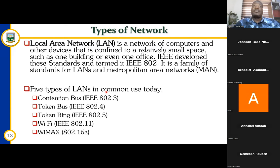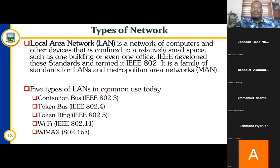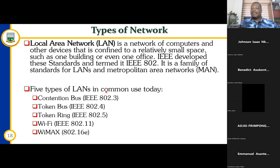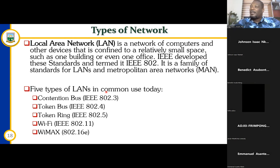On campus we have a local area network. For instance, School of Petroleum, where my office is, has a local area network. The library also has its local area network. Computer Science Department has its local area network. AT has a local area network. So we have so many local area networks on campus. We can combine all these local area networks on campus, and UMAT is still considered a local area network because it is more or less in the same geographical location.